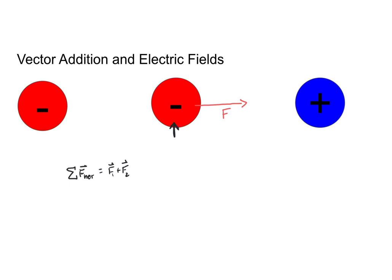Now let's look at the charge on the right. This is a positive charge, while my central charge is negative. That means that my negative charge is going to be attracted to my positive charge and will therefore experience a rightwards force as well. So when I'm calculating the net force on that charge, I'm going to add the two individual forces together.